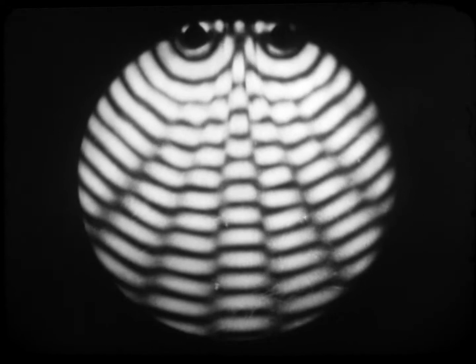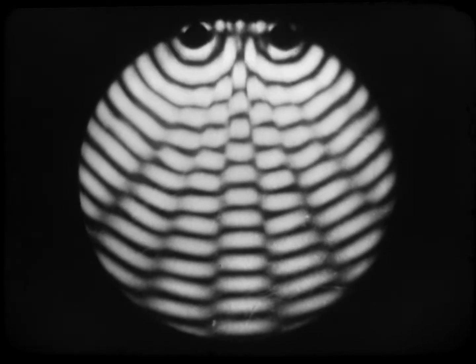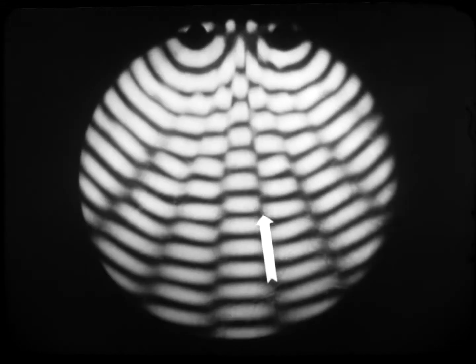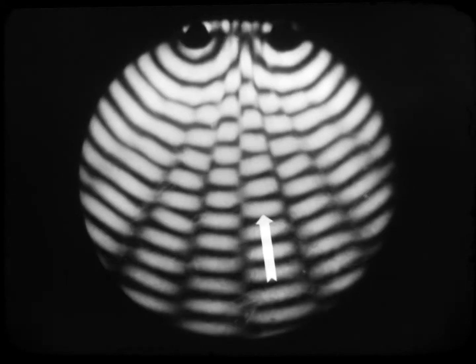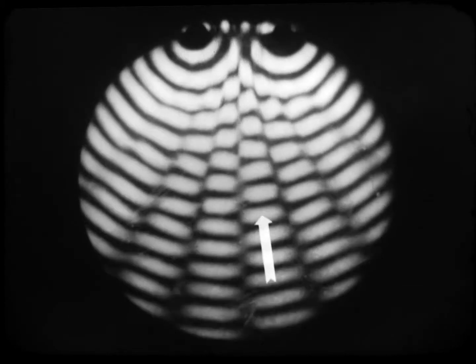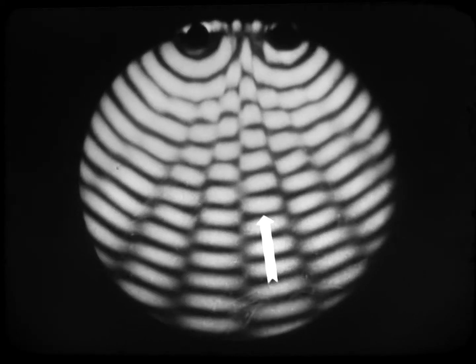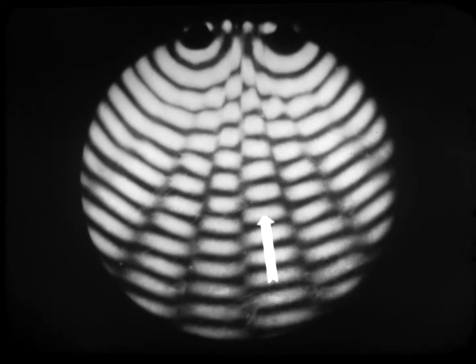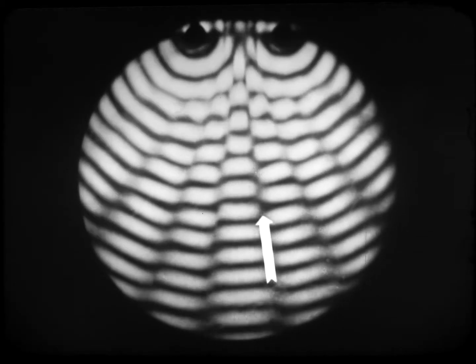When the two sources are vibrating in phase, they produce crests and troughs in step with one another. Note the position of this interference fringe. When one source is put out of step, we notice the shift of the interference fringes. The regions of maximum and minimum effects are interchanged — in phase, out of phase, in phase, out of phase.